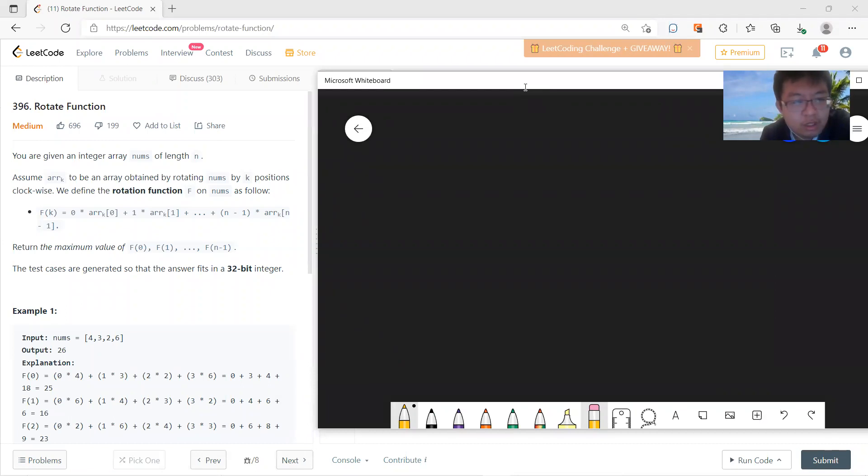Basically you have an array and there are k rotations which is clockwise, and you can define a rotation function where f of k becomes 0 times a_k0 plus 1 times a_k1 up to (n-1) times a_kn, and then return the maximum value of f(0), f(1), up to f(n-1).